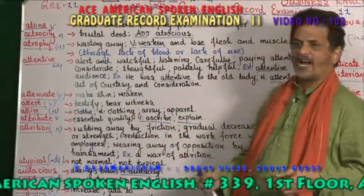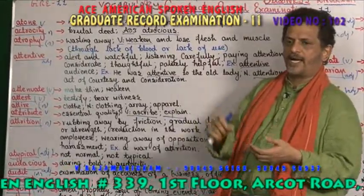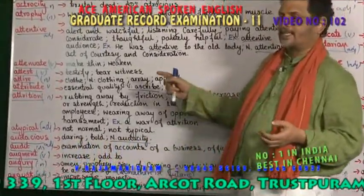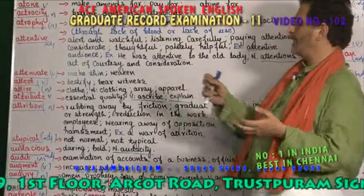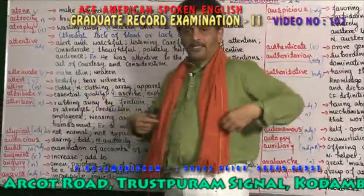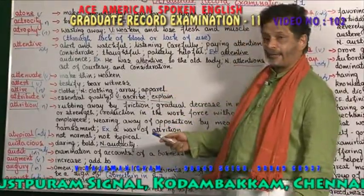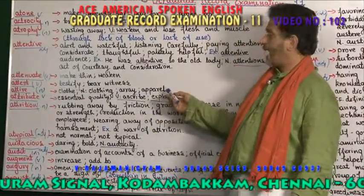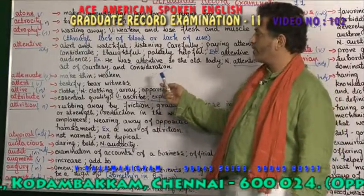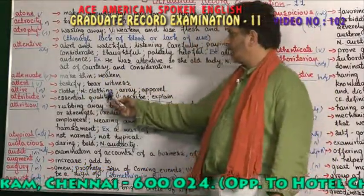Attest means to testify — you need a testimonial, to bear witness, someone should be a witness. 'Attire' refers to the clothes which you wear — clothing. It is also called 'array' or 'apparel.' All of these words — array, apparel, attire — refer to dress or clothing.